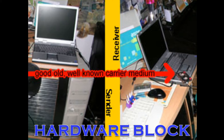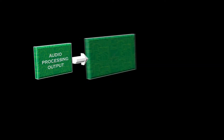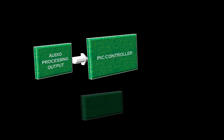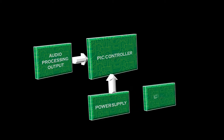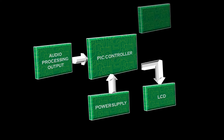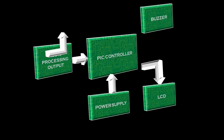We can also implement a hardware block as shown in the following slide. Here, the audio processing output, that is the stego audio, is given to a microcontroller which is connected to a power supply. If the password entered by the receiver is correct, then the secret text will be displayed on the LCD; otherwise, the buzzer will be set on.